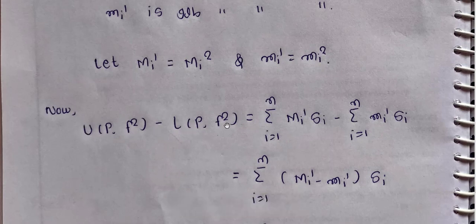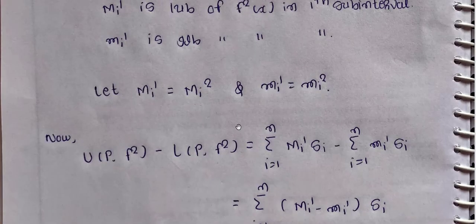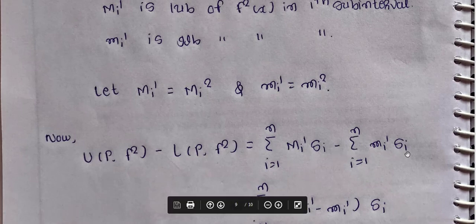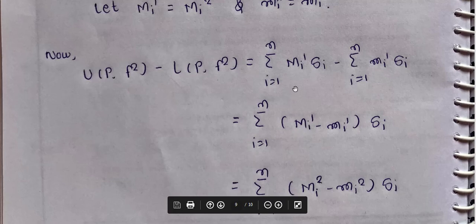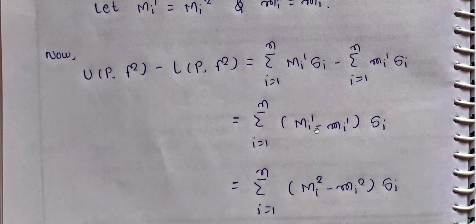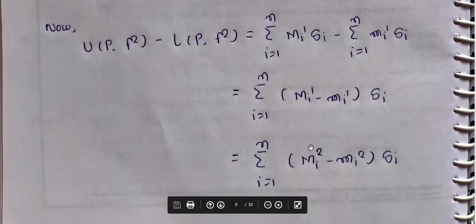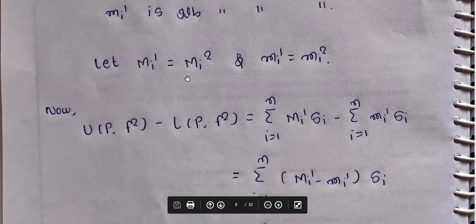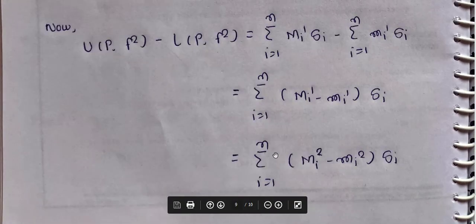Now U(P, f square) minus L(P, f square) equals summation i from 1 to n of Mi' into delta_i minus summation i from 1 to n of mi' into delta_i, which equals summation i from 1 to n of (Mi' minus mi') into delta_i. Therefore U(P, f square) minus L(P, f square) equals summation i from 1 to n of (Mi' minus mi') into delta_i.